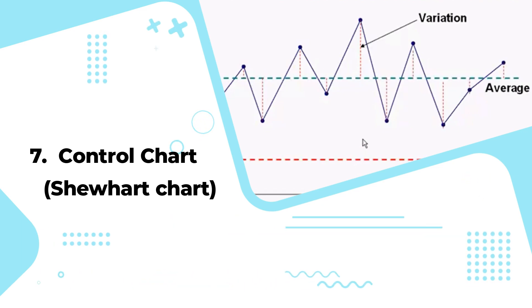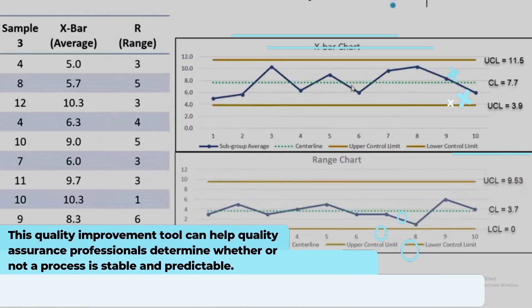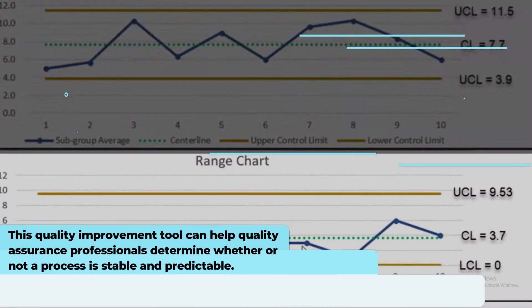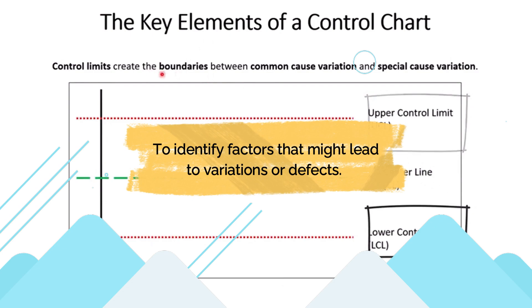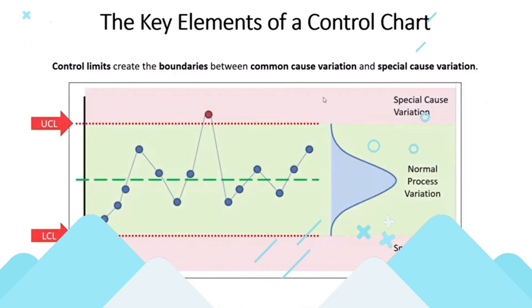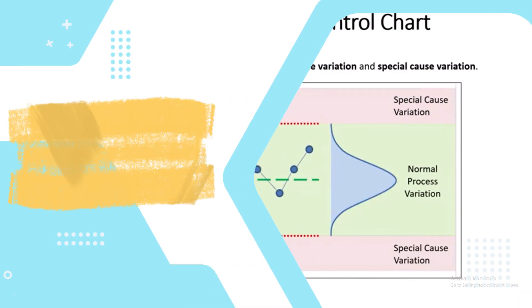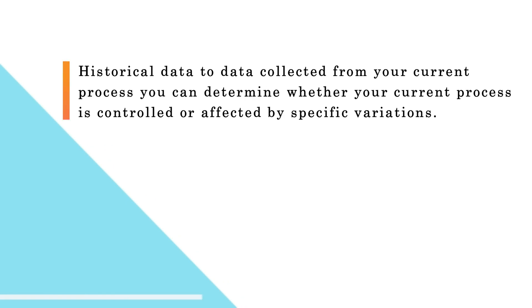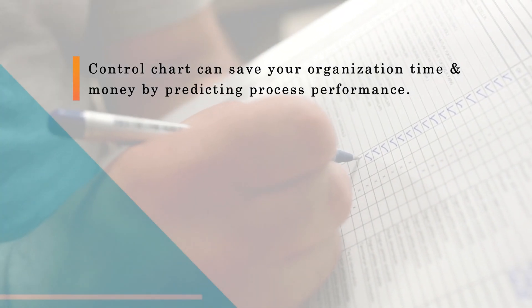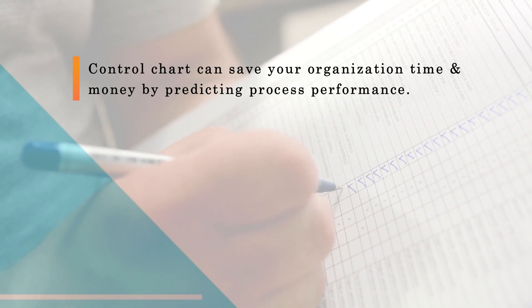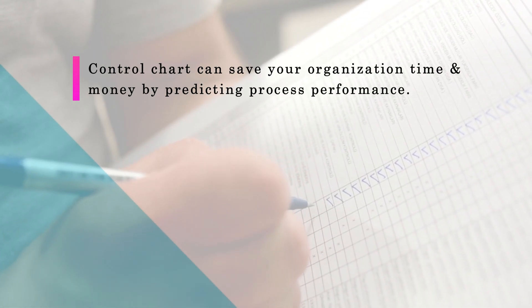Seventh is the control chart, also called a Shewhart chart, named after Walter A. Shewhart. This quality improvement tool can help quality assurance professionals determine whether or not a process is stable and predictable, making it easy to identify factors that might lead to variations or defects. Control charts use a central line to depict an average or mean, as well as upper and lower lines to depict control limits based on historical data. By comparing historical data to data collected from your current process, you can determine whether your process is controlled or affected by specific variations. Using a control chart can save your organization time and money by predicting process performance in terms of what your customer or organization expects in your final product.